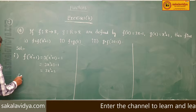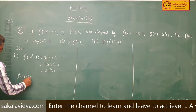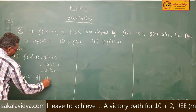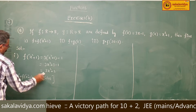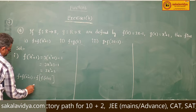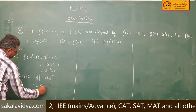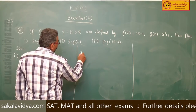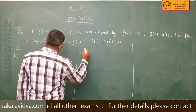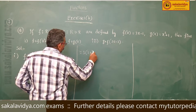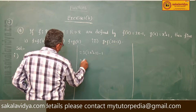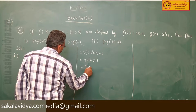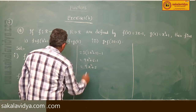Now, F circle F of x squared plus 1 equals F of F(x squared plus 1). Since F of x squared plus 1 is 3x squared plus 2, this becomes F of 3x squared plus 2. Substituting into F of x: 3 times (3x squared plus 2) minus 1, which gives 9x squared plus 6 minus 1, equals 9x squared plus 5. This is the answer to the first problem.